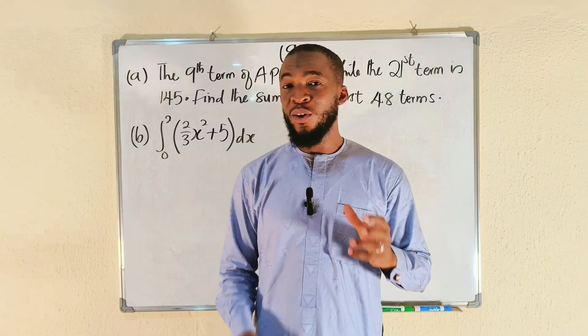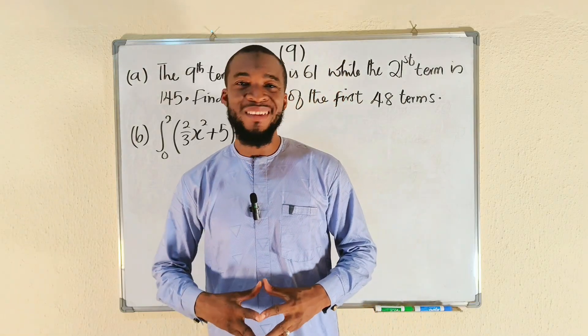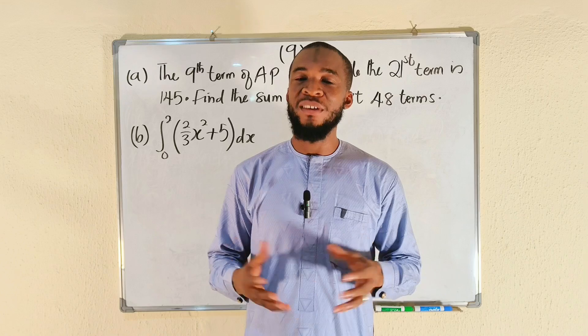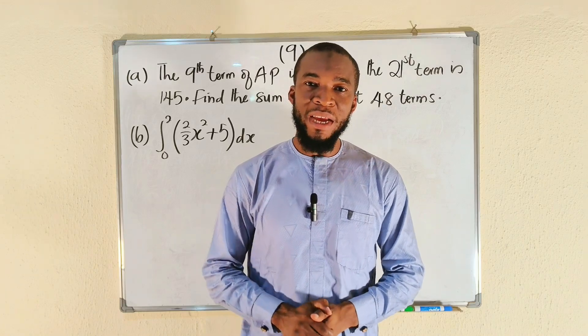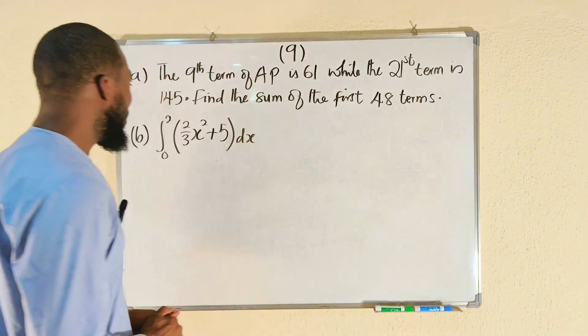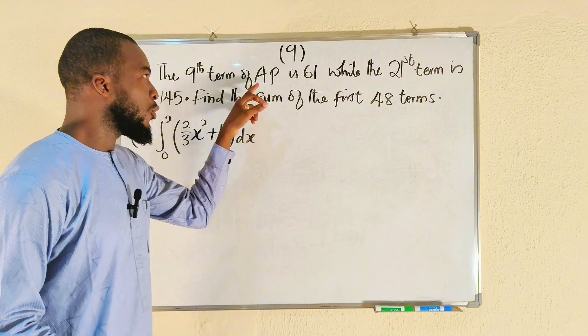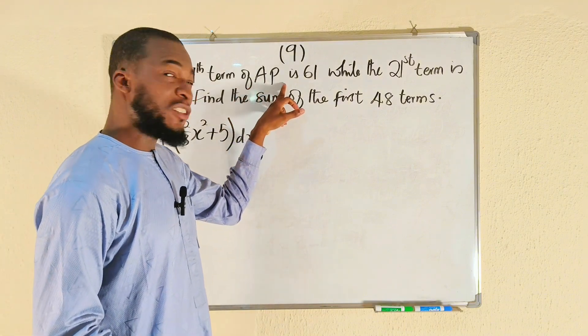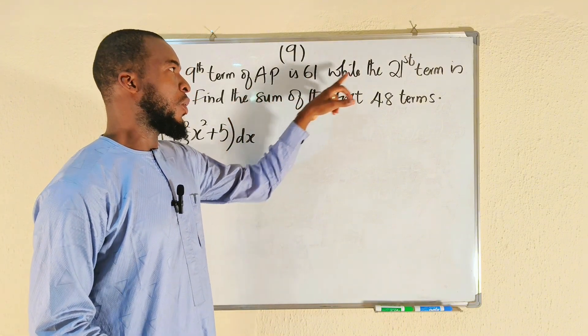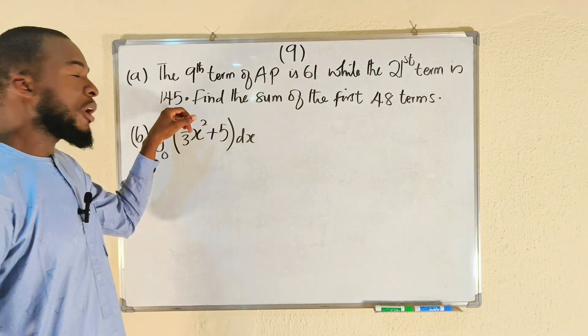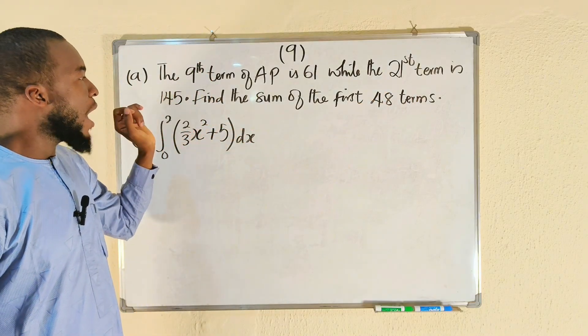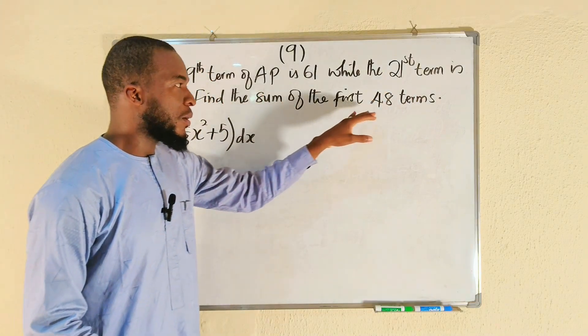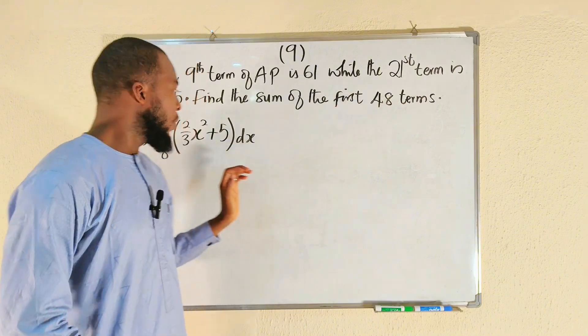Hello dear viewers, still on NACO 2024 mathematics examination theory questions. Here is question number nine. The ninth term of an arithmetic progression sequence is 61, while the 21st term is 145. We are asked to find the sum of the first 48 terms.